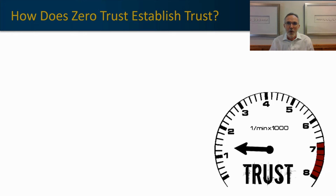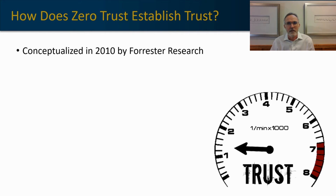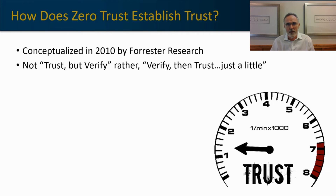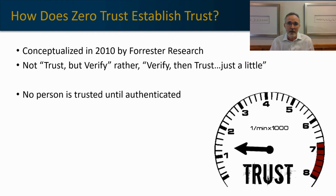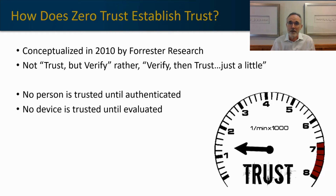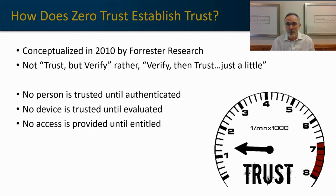Zero trust was conceptualized by Forrester Research about a decade ago. Rather than the current paradigm of allowing someone into your network and then authenticating that individual, zero trust turns that around — it authenticates first and then provides access to the network. We are not trusting until authentication has happened, and then we only trust a little based upon the specific context of that user: what entitlements do they have, what resources are they requesting access to, and what is the environment in which they operate. No person is trusted until authenticated, no device is trusted until it's been interrogated and found to meet certain parameters, and no access is allowed unless it's specifically entitled for that user or application.